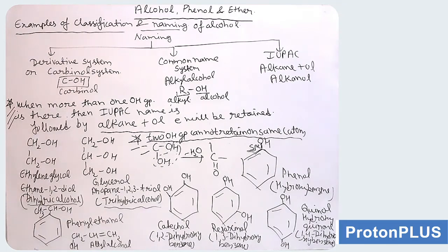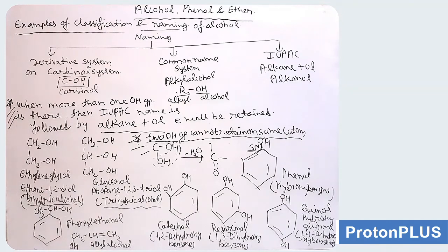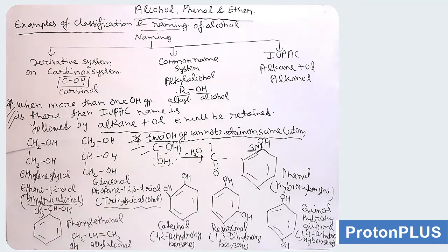We will take some examples of dihydric and trihydric alcohol. First, CH2OH-CH2OH: two OH groups adjacent to each other. This is ethylene glycol — common name — and the IUPAC name is ethane-1,2-diol, as the longest chain is 2 carbons (ethane), 'e' is retained, and the OH positions are 1 and 2. If three OH groups are there in successive positions, the example is glycerol: IUPAC name is propane-1,2,3-triol, with 'e' retained.